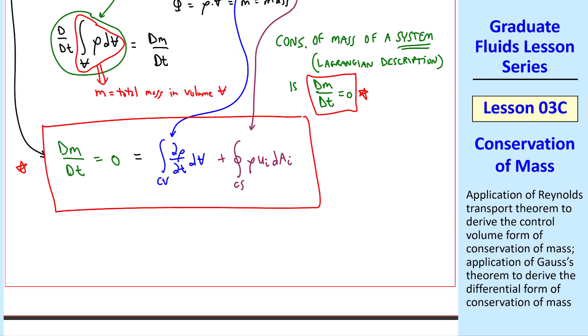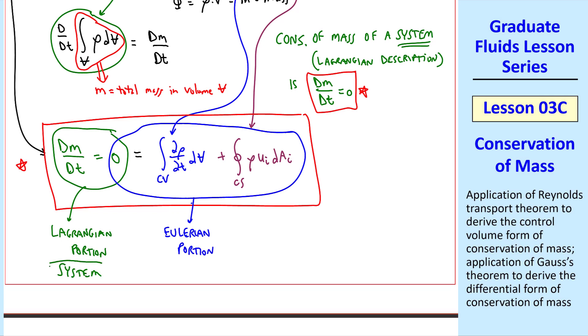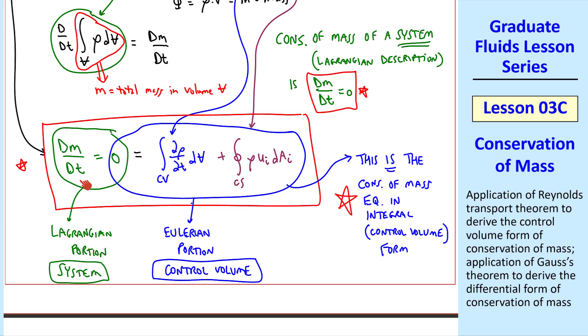I like to write it this way because we can clearly define the Lagrangian portion and the Eulerian portion of this equation. This left portion of the equation is the system equation, and the right portion of the equation applies for a control volume. So this blue circled portion of the equation is the conservation of mass equation in integral, or control volume, form. Thus by simple substitution of phi equal rho in the Reynolds transport theorem, and recognizing conservation of mass for a system, we now have the control volume form of conservation of mass.